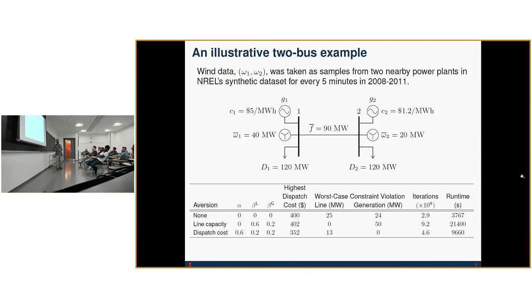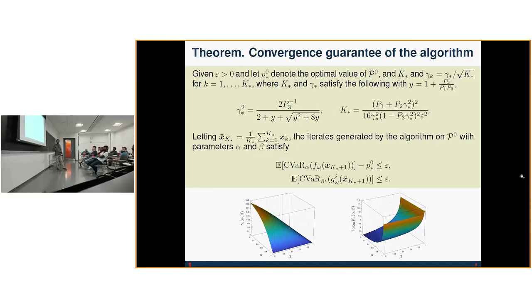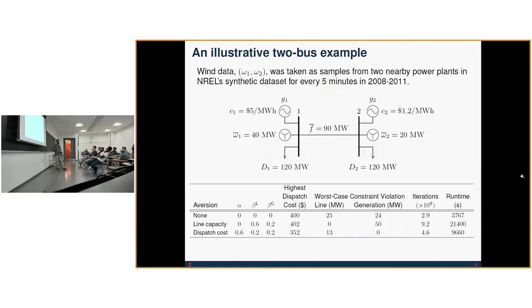and defining the following risk aversion parameters, where alpha denotes the objective cost, beta L denotes the parameter associated with line capacity constraints, and beta G denotes the generation capacity limits.